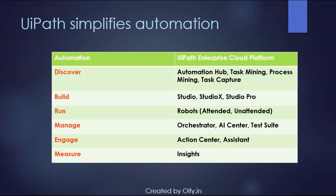The UiPath enterprise cloud platform encapsulates all stages of the automation journey. You leverage the automation hub, task capture, and process mining in the discovery phase — task capture generates an automated Process Design Document by analyzing your manual processes. In the build phase you use Studio, Studio X, or Studio Pro. The run phase is achieved through bots which can be attended or unattended. You manage automation through the orchestrator and engage users through the Action Center and UiPath Assistant.